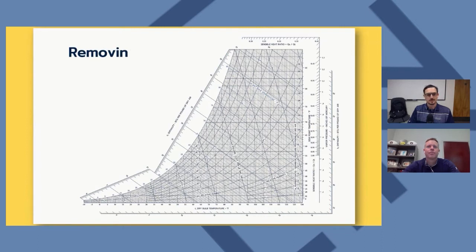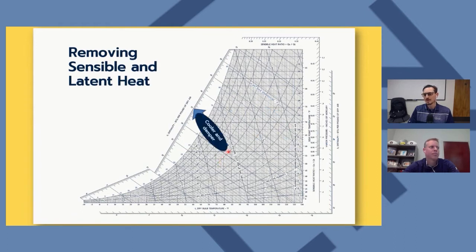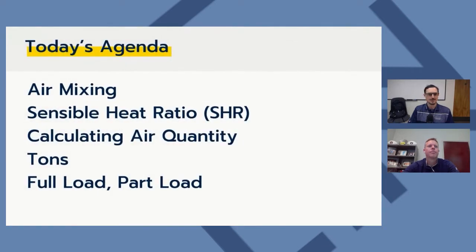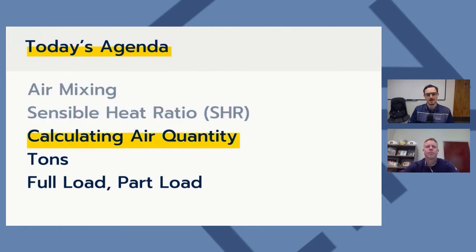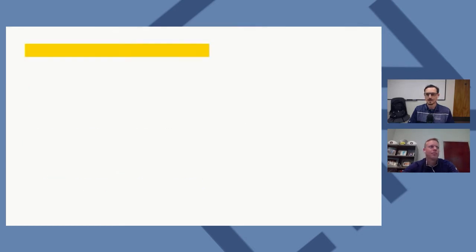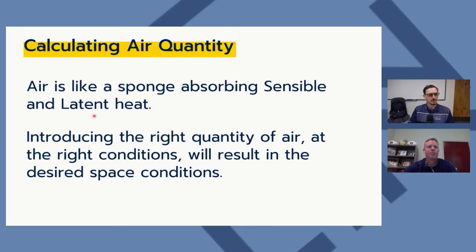If we remove too much sensible and not enough latent heat, the space will be cooler and damper than the design conditions. If we remove too much latent and not enough sensible, it will be warmer and drier. That's why the SHR is so critical. Next we calculate air quantity in CFM. Air is like a sponge — introducing the right quantity at the right conditions results in the design space conditions.